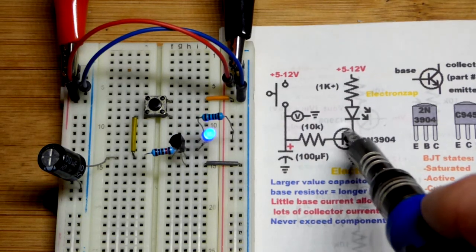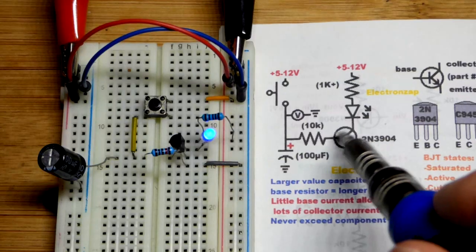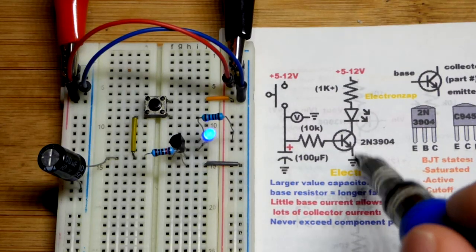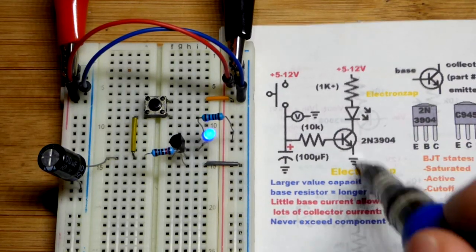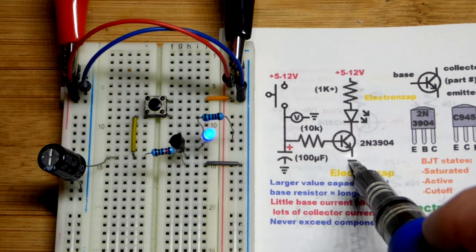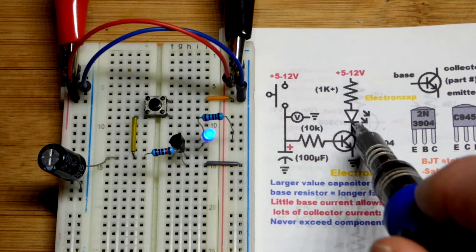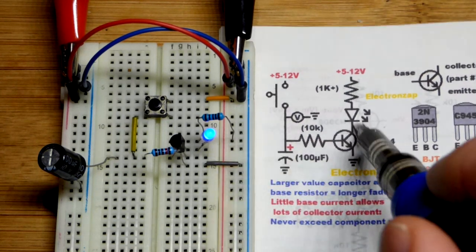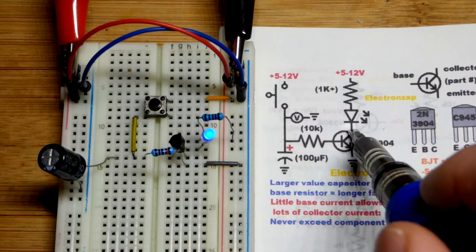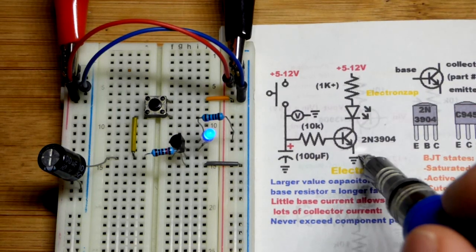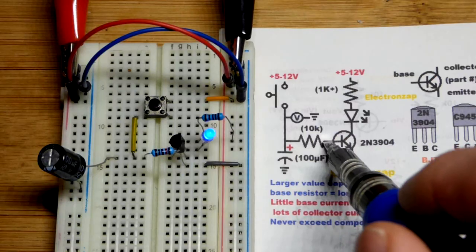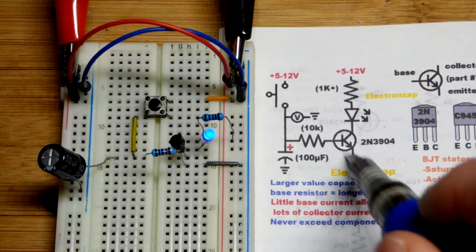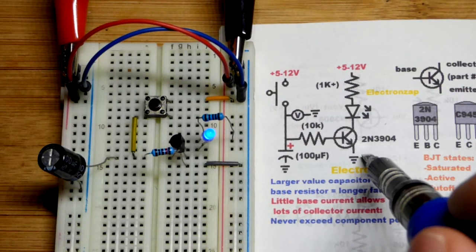But in any case, somewhere around 100, 200 times, whatever the base to emitter current is, the transistor will let flow from collector to emitter. Not very hard to get above, I think with the 5 volts, we're only getting like 3 milliamps of current right here. So we just need to get like 1% of that going through base to emitter to get it on fully.